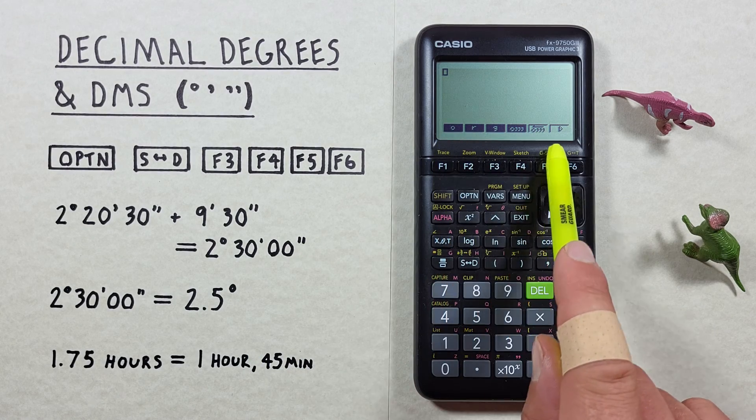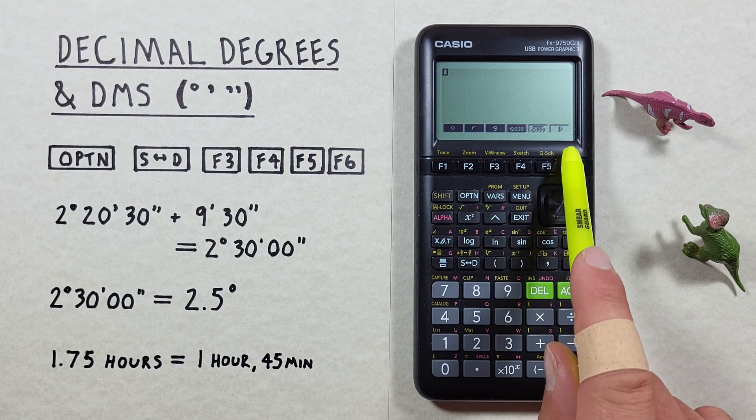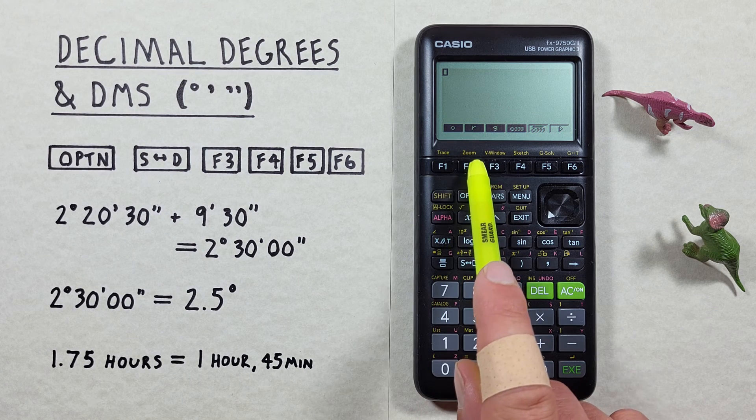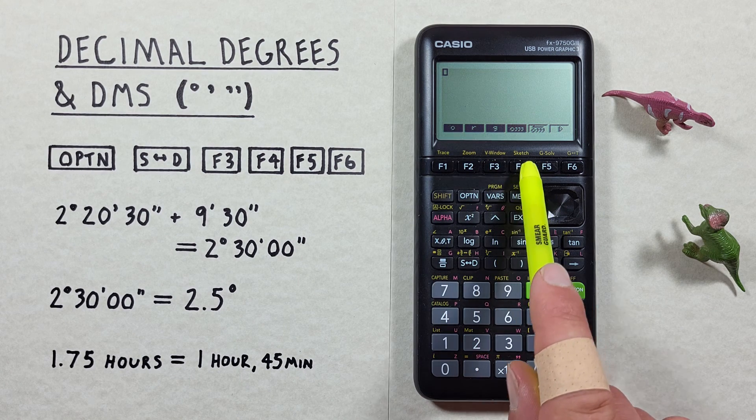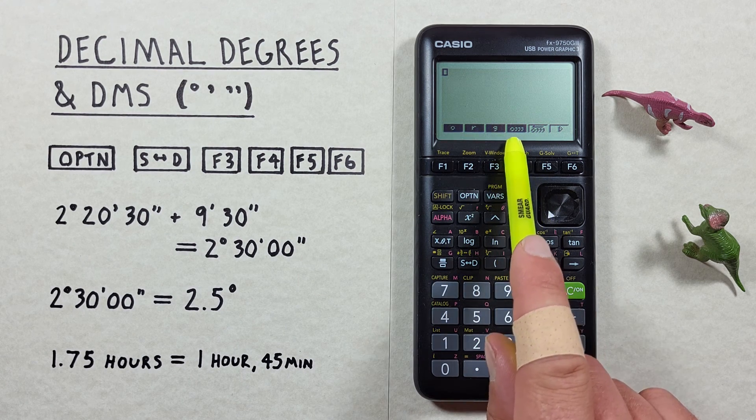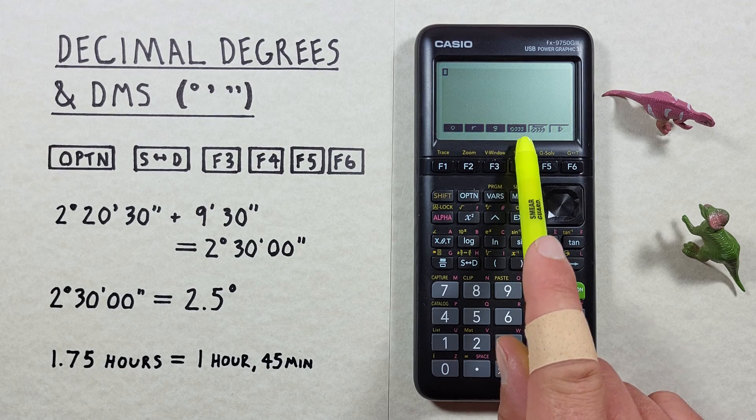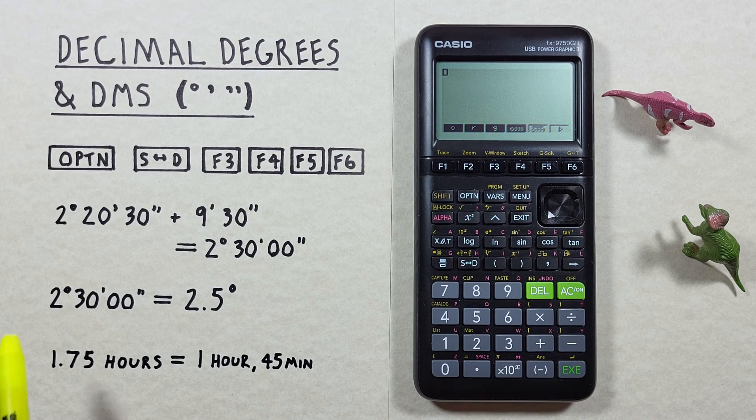Now we see here our different angle options: degrees, radians, gradients, and at F4 this represents degrees minutes seconds. We can go ahead and get started.